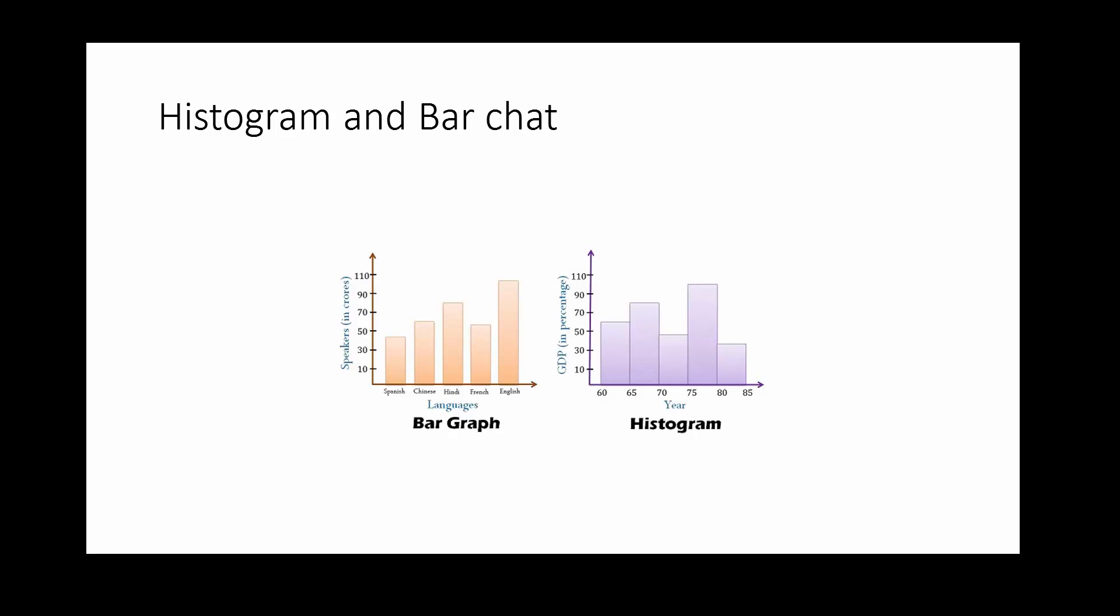What are the basic differences between histogram and a bar chart? As you can see on this slide, I have a bar chart and I also have a histogram.